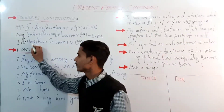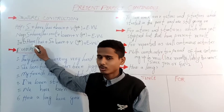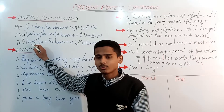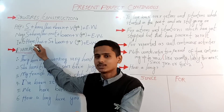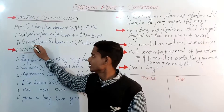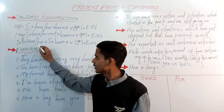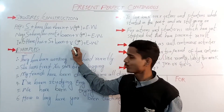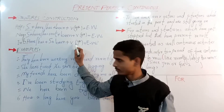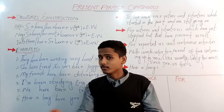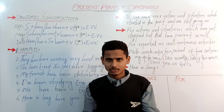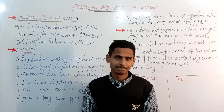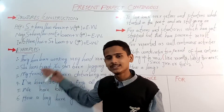For the interrogative structure, we put the auxiliary or helping verb first at the beginning to give the sentence an interrogative nature. So we have: have or has, then the subject, then 'been', then the verb in fourth form, plus any optional extra words like 'since' or 'for' plus a time.